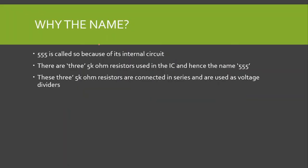Why do we call it the 555 timer? The 555 timer is called so because of its internal circuit — there are three 5 kilo-ohm resistors used in the IC, and hence the name 555. These three 5 kilo-ohm resistors are connected in series and are used as voltage dividers.